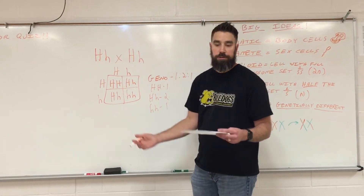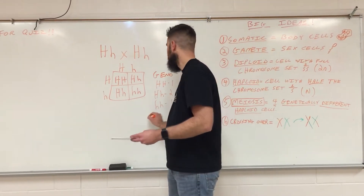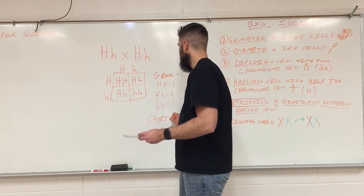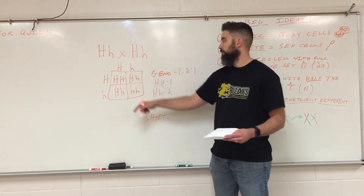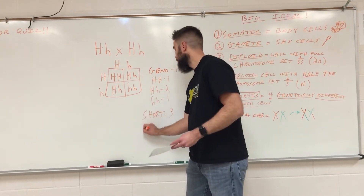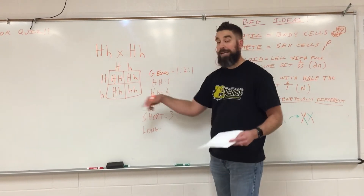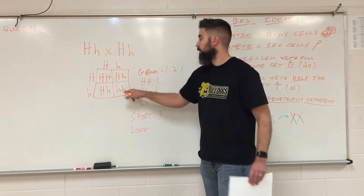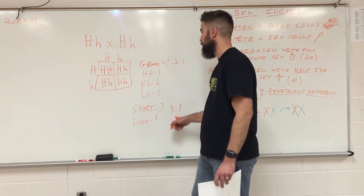If it's talking phenotype, that's the physical trait — in this case, whether the cat has short hair or long hair. So your phenotypic ratio: short hair is dominant, so how many are going to code for short hair? It's going to be three. And then for long hair, which is the recessive trait — to get the recessive trait you have to have two recessive alleles — so it's going to be one. Your ratio is three to one.